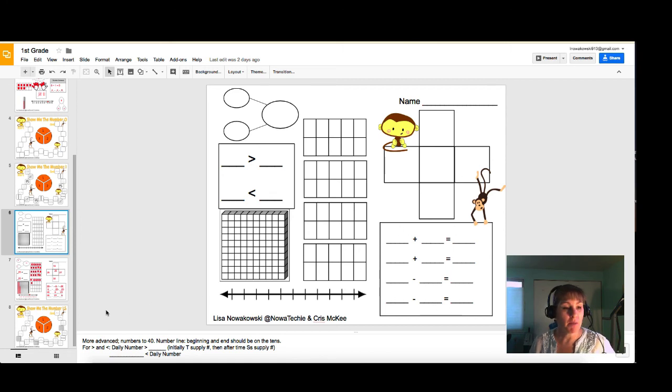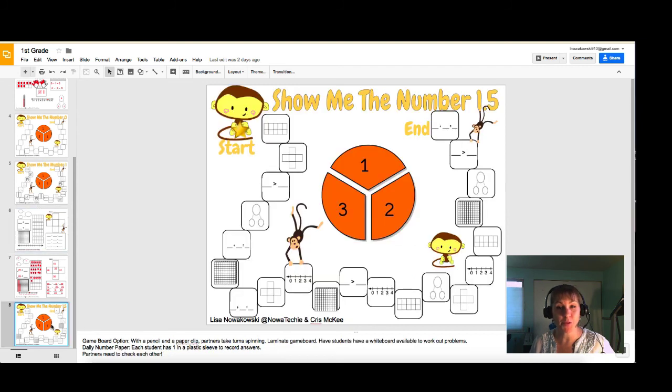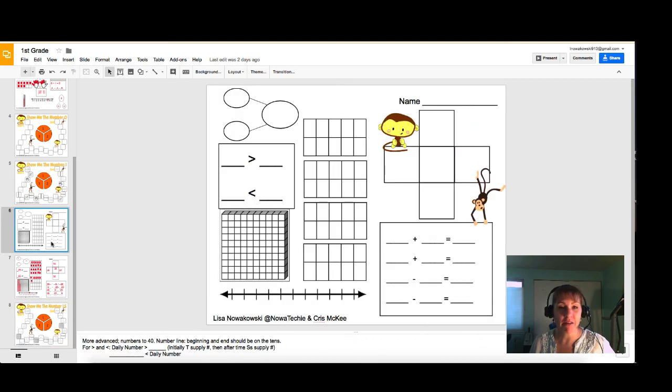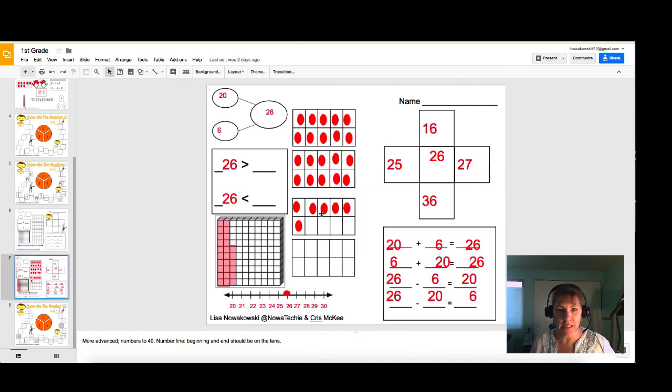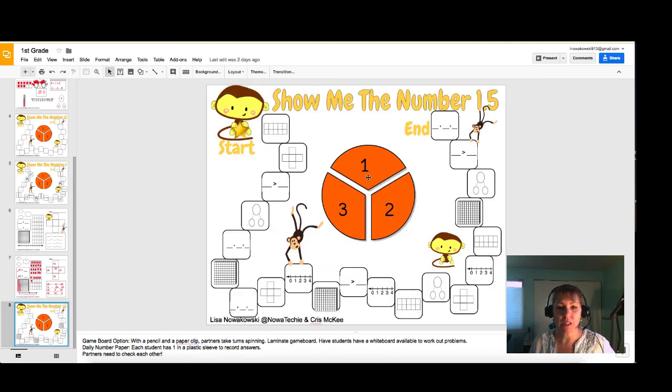The game is played the same way. You have show me the numbers 1.5 using the different icons here with the second paper. And again the setup would be to have this in a plastic sleeve on one side. I recommend putting an example on the back for students to refer to. And then still using the spinner here in the middle with a pencil and paper clip.